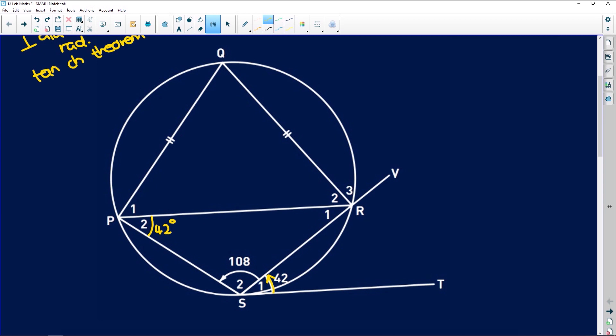Also, with our cyclic quad, because this S2 is 108 degrees, it means that this over here is 108 degrees or 180 degrees minus 108 because they're supplementary, which means that this angle here is 72 degrees. Okay. Also, we are given that we have equal sides, which means what? We have equal angles opposite those sides.